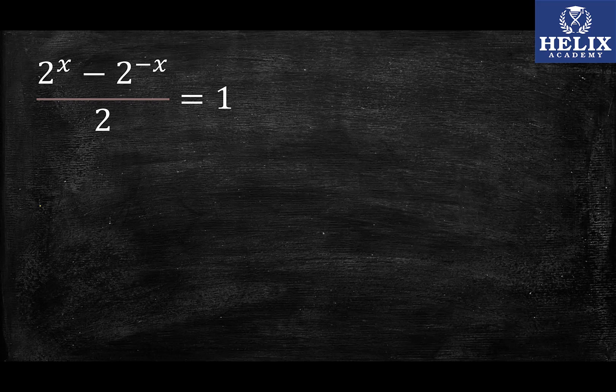Hello guys and welcome back to Helix Academy's channel. In this question we're going to solve for x and this is an exponential equation. It is a little tricky because if I actually simplify this as 2^x - 2^(-x) = 2 by cross multiplication.